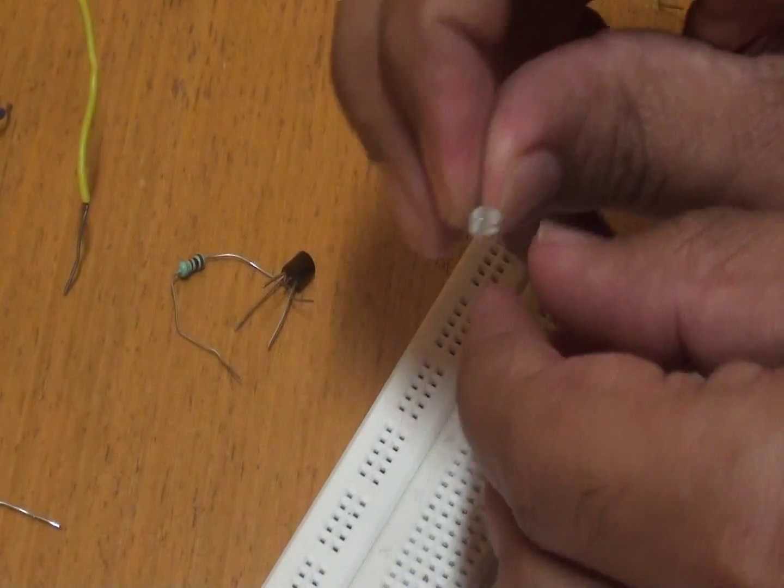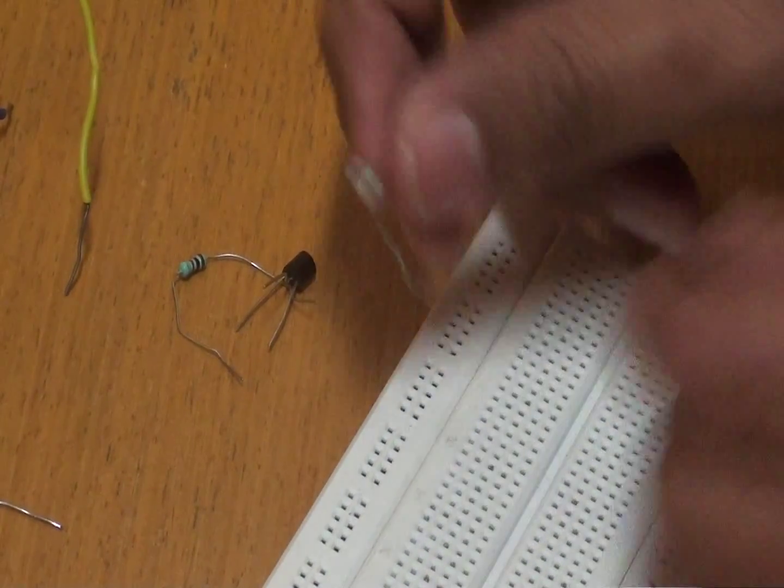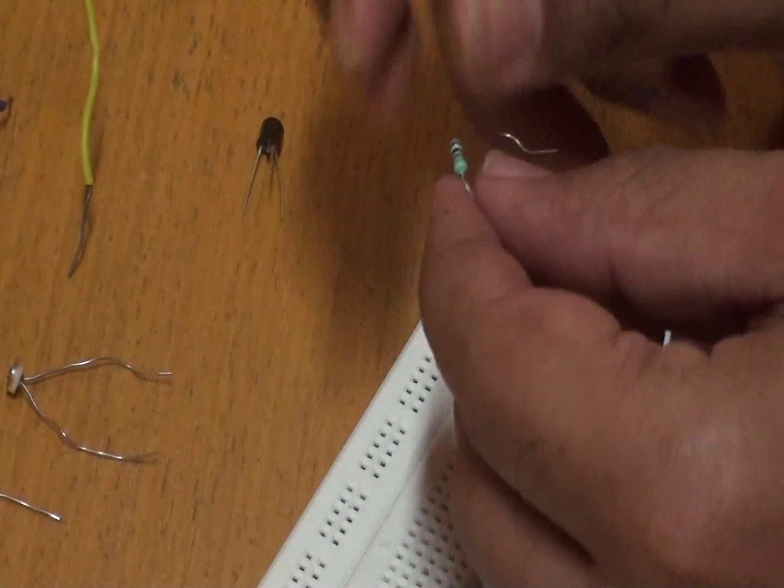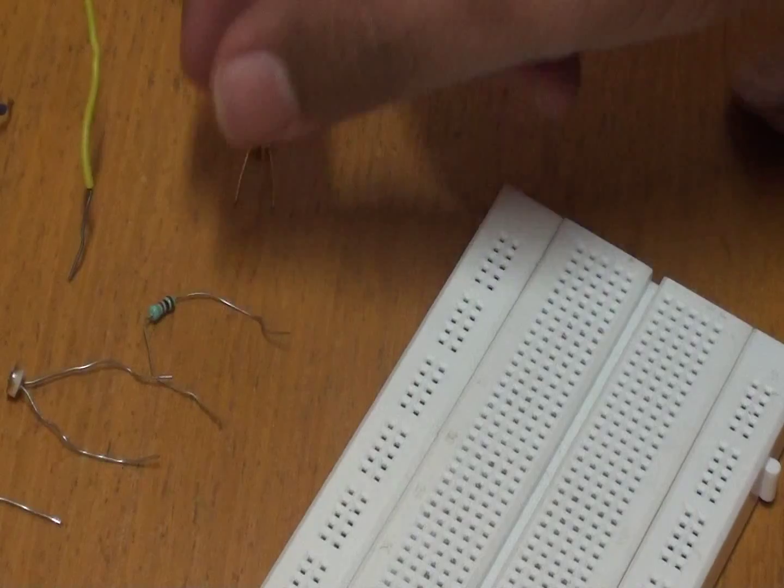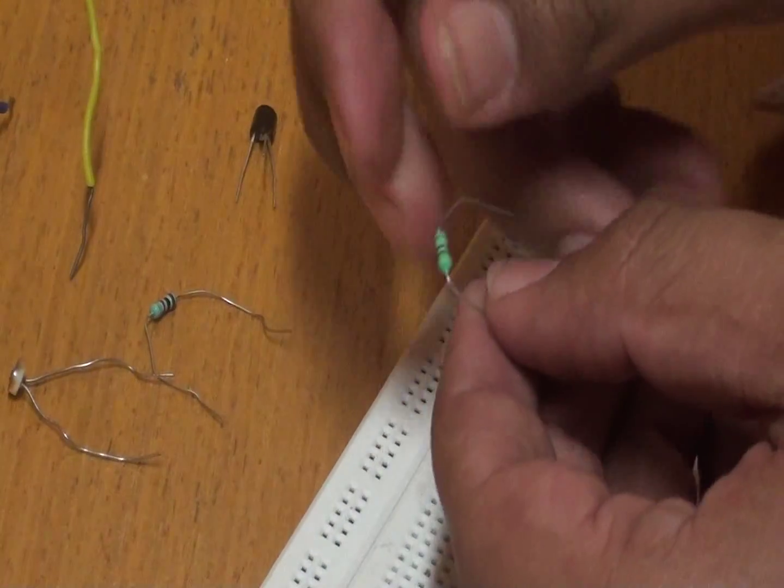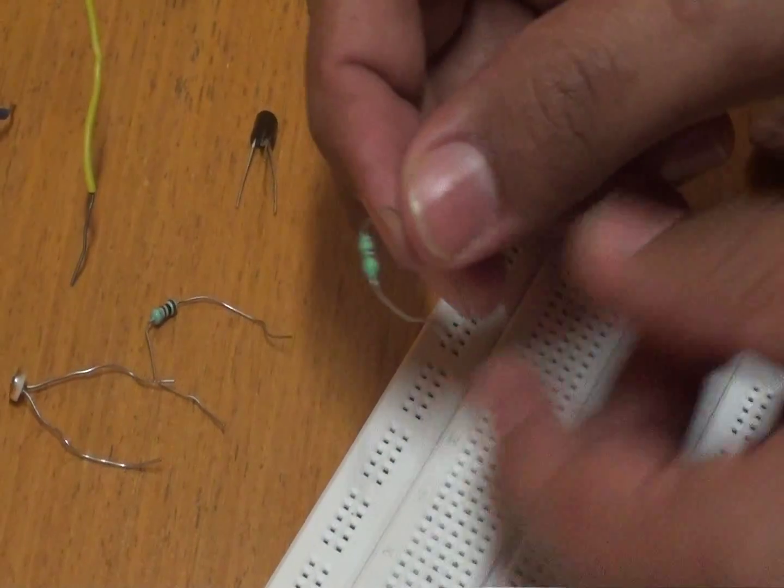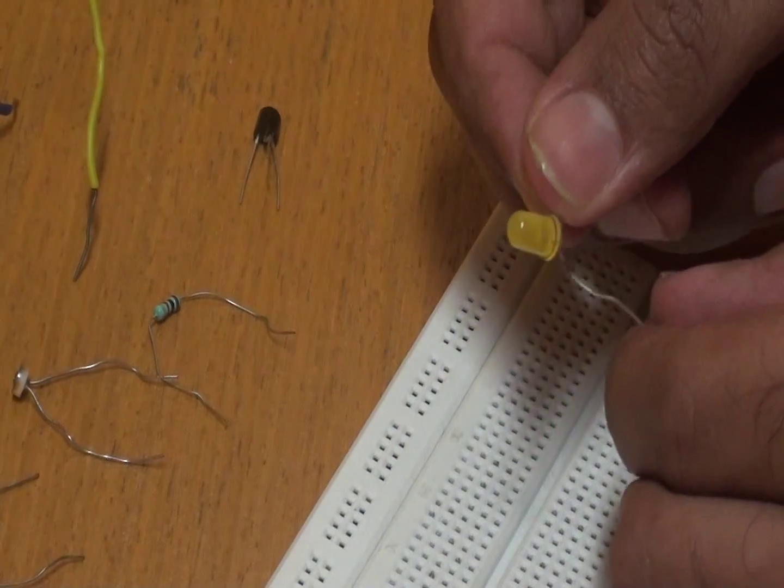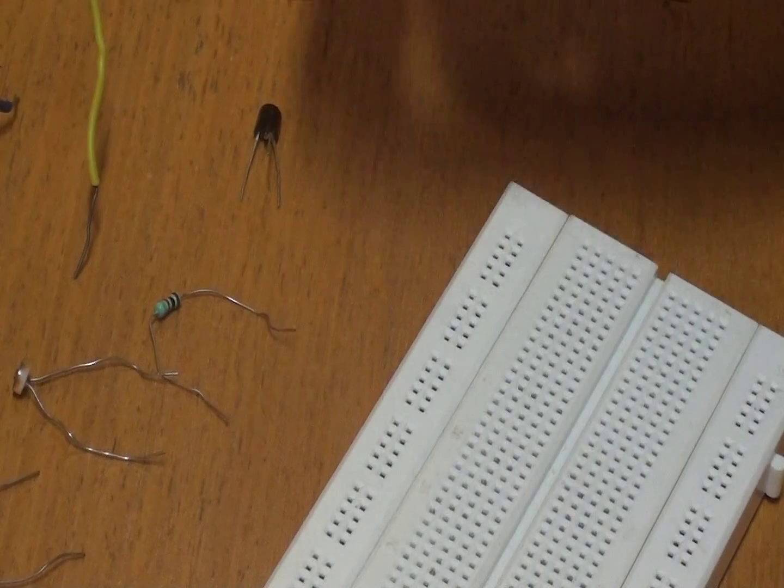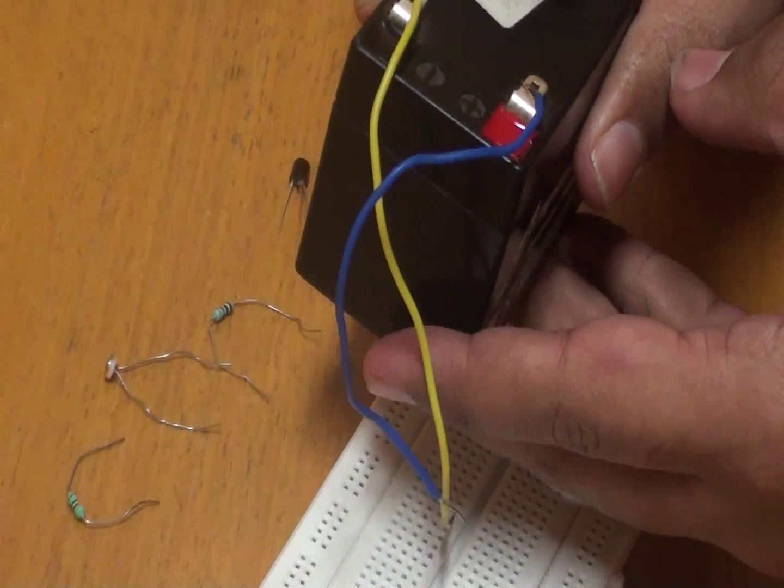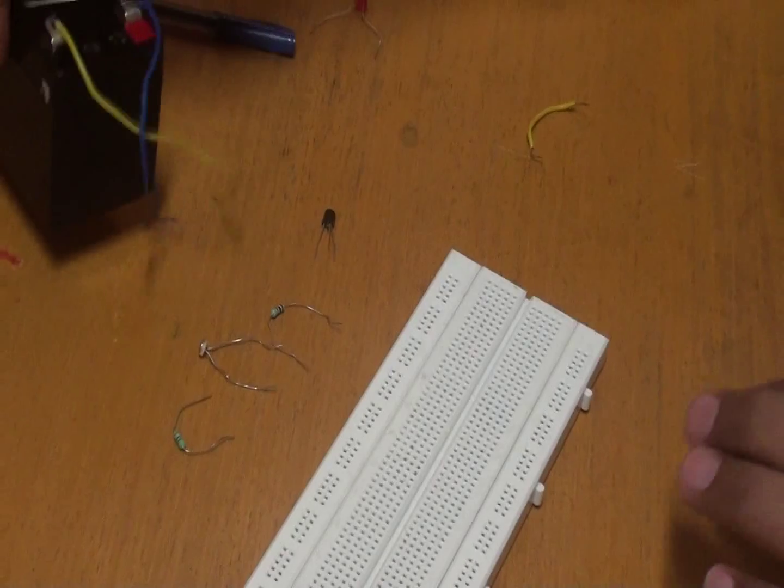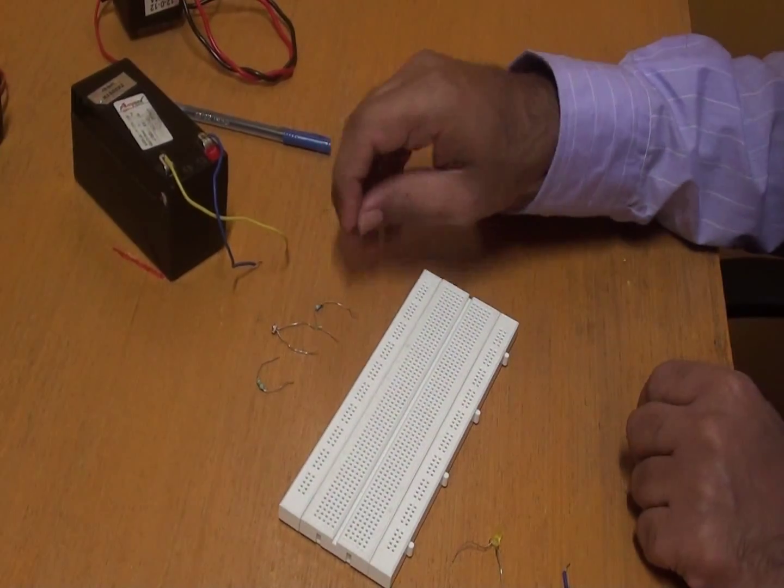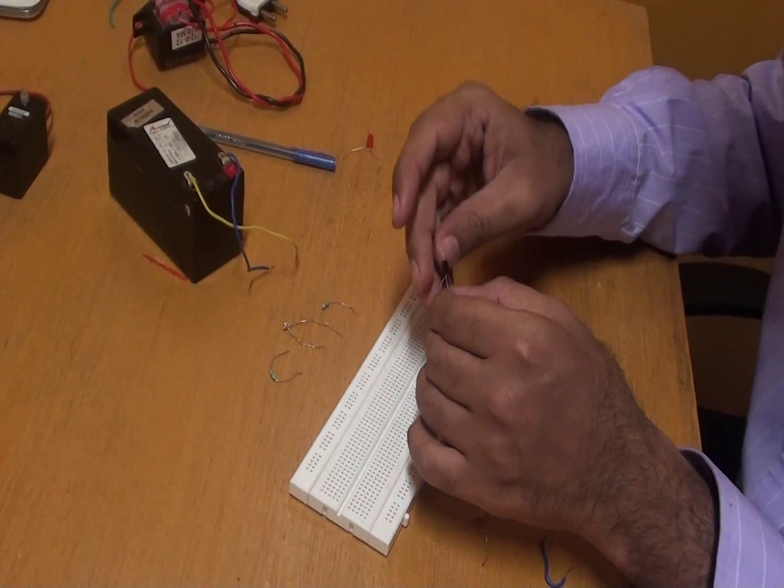We will be using a photo resistor, and we will be using a 4.7 kilo ohm resistor, and 4.7 kilo ohm resistor, and an LED to blink. And we will be using a 12 volt power supply. So now I will be just giving the connections and you can see how a BC547 works.